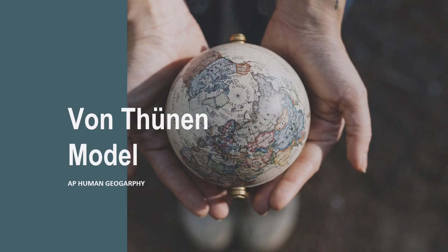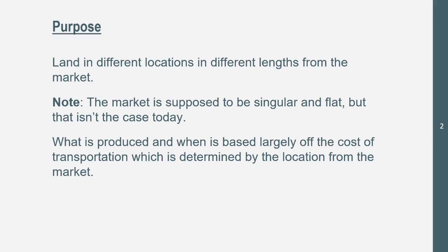What's going on everybody, my friends. We're going to be getting into the Von Tunen model for AP Human Geography. This is a very cool model that will show relationships between where stuff is distributed, transportation costs, and where the market is. Let's get into this.